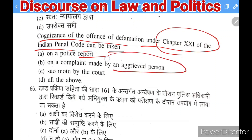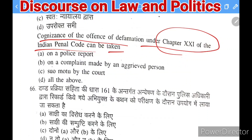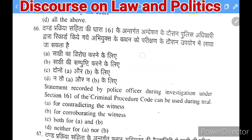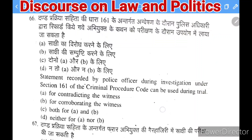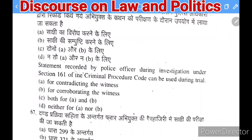Next question: an offense of defamation under Chapter 21 of the IPC can be taken cognizance of — on a police report, on a complaint by the aggrieved person, suo motu by the court, or all of the above. The right answer is that it can only be taken on a complaint filed by the aggrieved person.